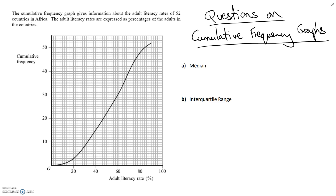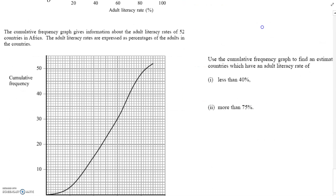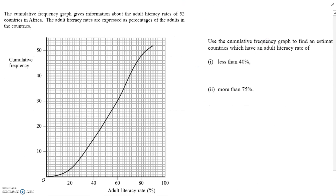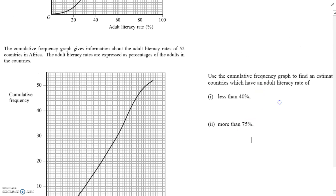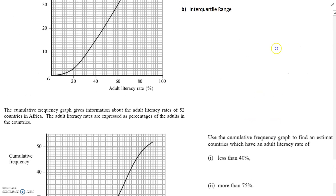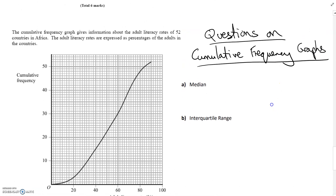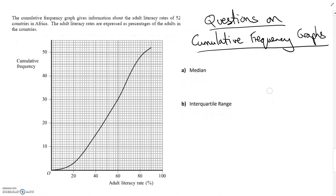Here we're going to look at questions that can arise once you've drawn your cumulative frequency graphs, or if they give you a cumulative frequency graph like this. Things they can ask you about it: we're going to look at the median, interquartile range, and move on to some other questions. This is the same example but a different question on the right-hand side. Let's have a look at finding the median and the interquartile range — we've done these now so they should make sense.